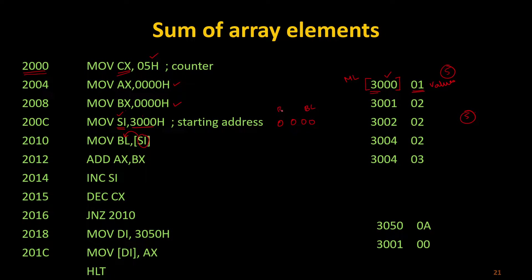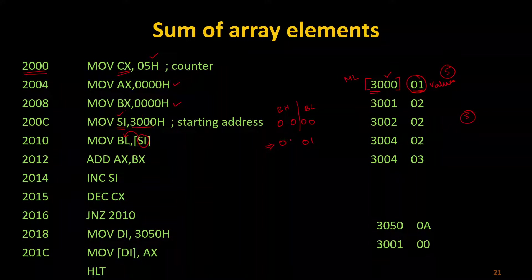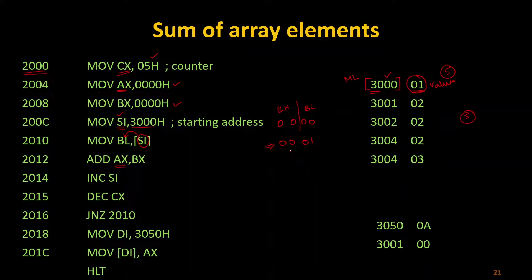Initially my BX is going to be 0000 — BL is the lower byte and BH is the upper byte. I am pushing the values of SI into BL. Initially the value at SI (pointing to 3000) is going to be 01, so BX will get the value 0001. After that I am going to add it with AX. AX is also initialized to 00, so AX becomes 0001 after the first iteration.